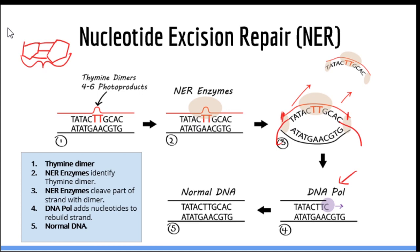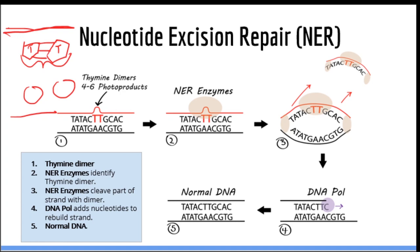When you have a thymine dimer, you form abnormal bonds. For example, let's pretend we have a strand of DNA with nucleotides here and nucleotides here. These two thymines, which are adjacent to each other, will actually form abnormal covalent bonds. This is not good because it can cause DNA polymerase to misread and insert the wrong nucleotide during DNA replication.